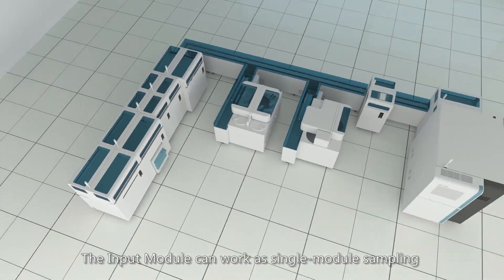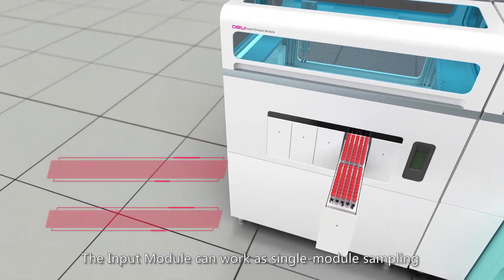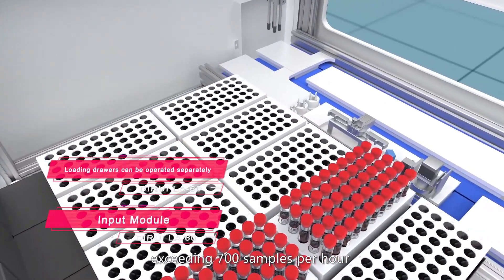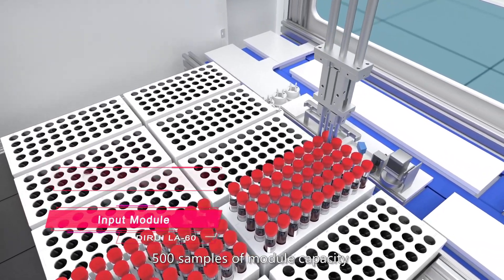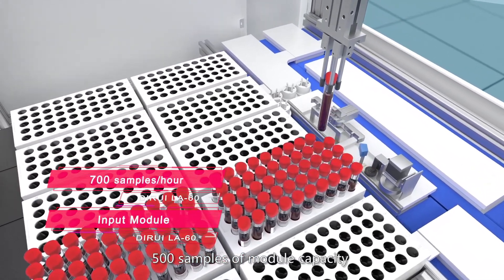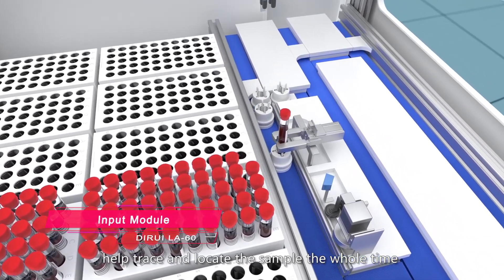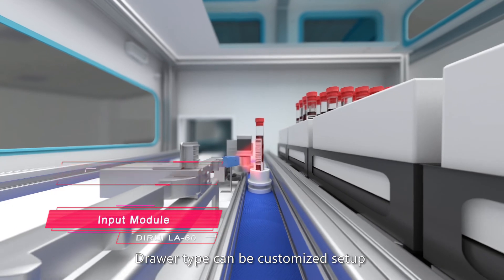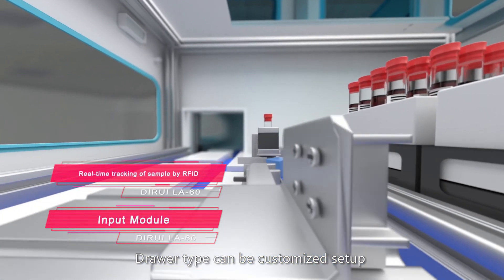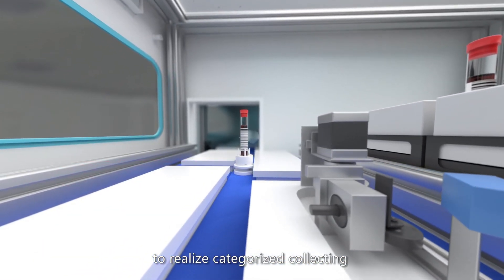The input module can work as single-module sampling, exceeding 700 samples per hour, with 500 samples of module capacity. RFID radio frequency technology helps trace and locate samples the whole time. Drawer type can be customized to realize categorized collecting.